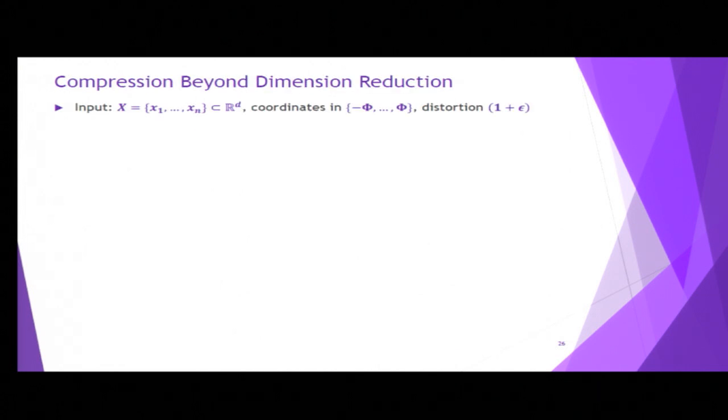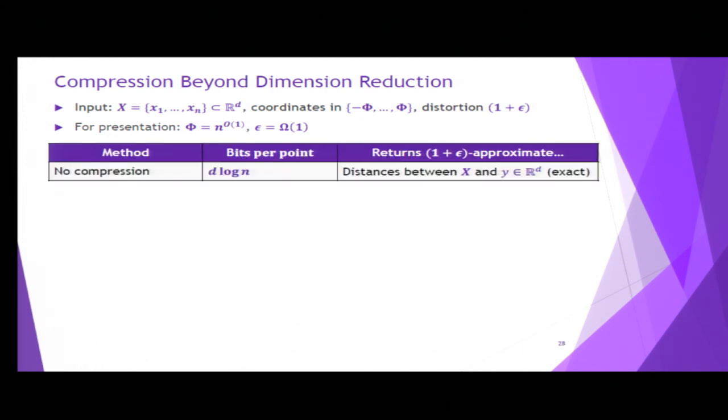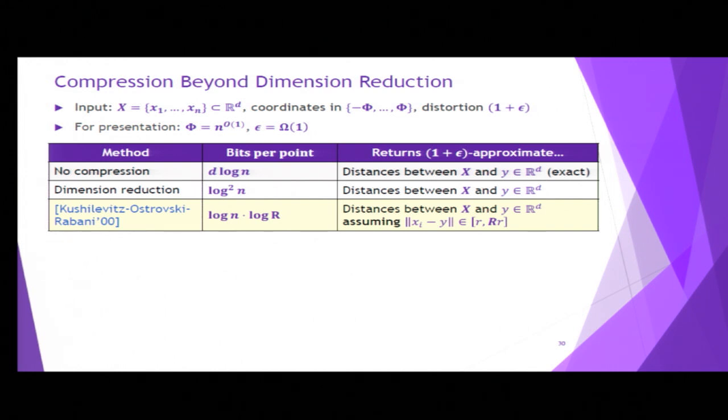Let me go over our results in the context of previous results. Just to simplify the bounds, let's assume that machine words take log n bits to store, and that epsilon is a small constant. If we don't compress anything, we need d numbers per point. If we use dimension reduction, then log n numbers, or log squared n bits. This is what we had so far. There is a well-known paper by Kushilewitz, Ostrovsky, and Rabani on approximate nearest neighbor search, where they show that if you only care about a limited scale of distances that you can maybe describe with log r bits instead of log Φ bits, then you can scale your sketch size appropriately. This is a refinement of Johnson-Lindenstrauss.